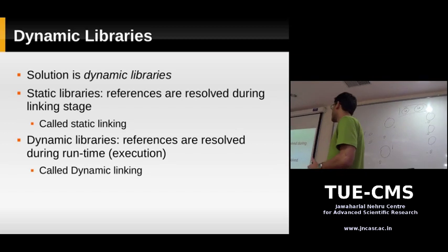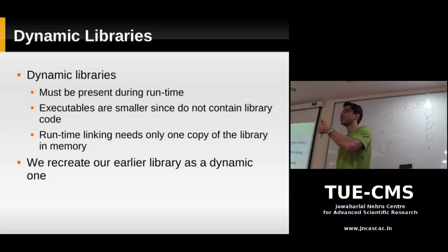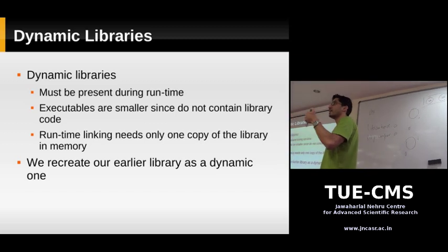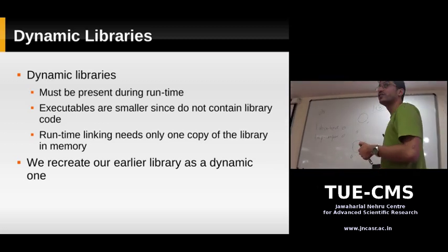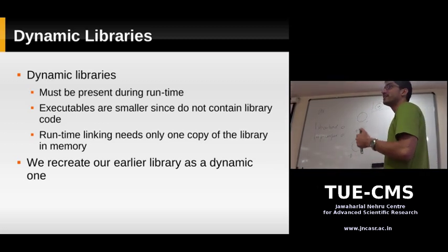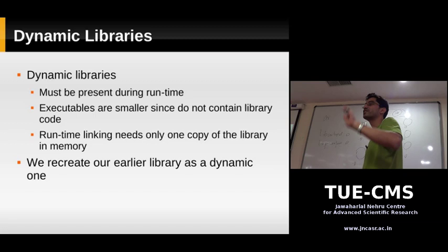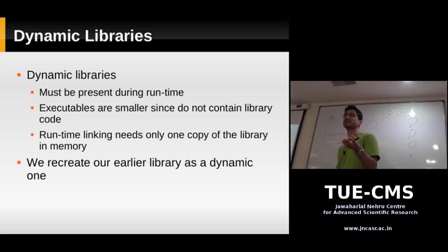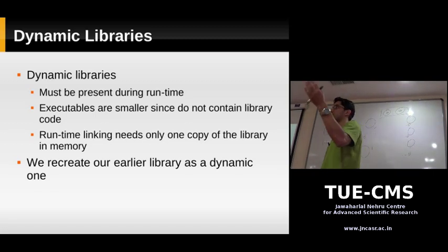The catch of dynamic libraries is that you have to have your library code available when you run your program. In static linking, the linker takes the object code, merges it together and produces an executable — so the executable has the library code in it. But in dynamic linking, your executable does not have the library code in it. So when you run your program, you have to have your library available; only then can the operating system link your library functions with your main program code.